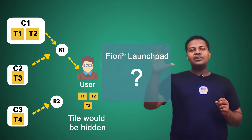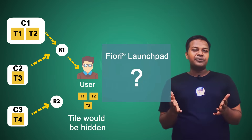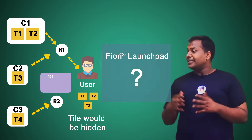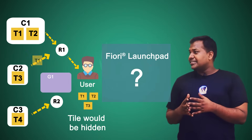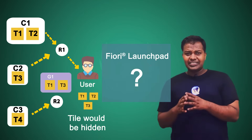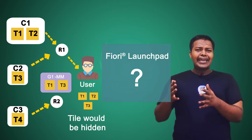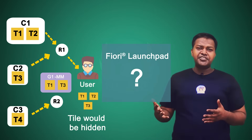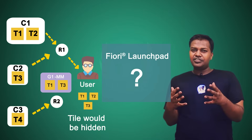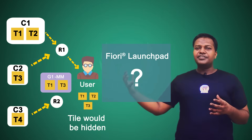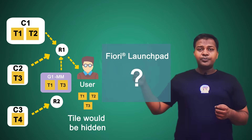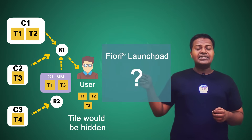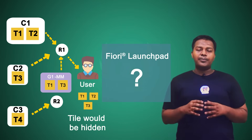In the Fiori launchpad, all different tiles are grouped together. We can have a group G1, and this group G1 is assigned tiles T1 and T3. G1 represents all the Material Management (MM) related functional tiles grouped together. These groups are then assigned to roles — so we assign group G1 to role R1.